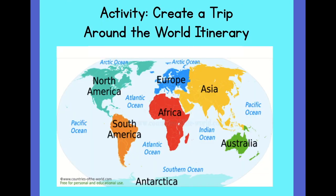You can create a trip around the world itinerary. Imagine you are going to visit all seven continents. Which one would you choose to go to first? How would you get there? What will you see? What will you do? Create an itinerary or list the order of the continents you would visit. Explain how you would travel to each continent. Would you drive? Would you take an airplane, a boat, or a train? Write or talk about what you think you would see and do when you visit each continent. This is a great way to use your imagination.